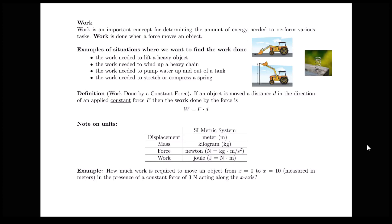We'll look at the details involved in computing the work in those various situations, but first we need to go over the definition of work in the case that work is done by a constant force. If an object is moved a distance d in the direction of an applied constant force f, then the work done by that force is given by the formula work equals force times distance.